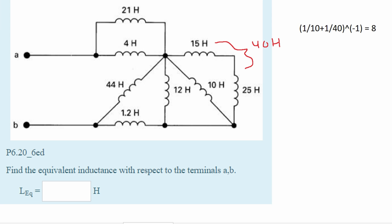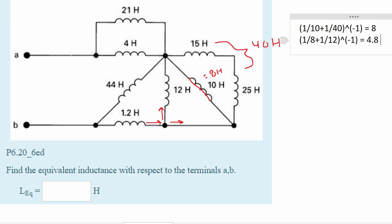This inductor is equivalent to 8 Henrys once we combine all of them together. Now this 10 Henry inductor is in parallel with our other 10 Henry inductor because some current is going to flow through it. We get 4.8 from this, meaning this 12 Henry inductor is basically equivalent to 4.8 Henrys.